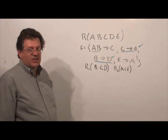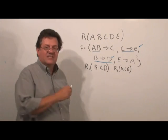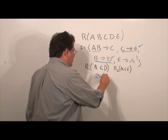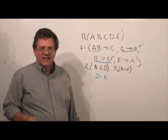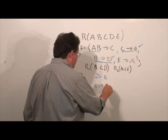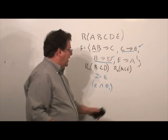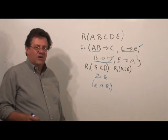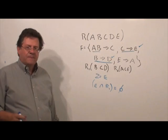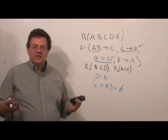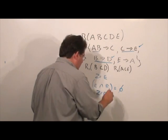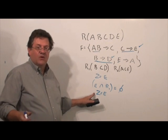Now, finally, we look at E function determines A. And we want to see whether that functional dependency is preserved. So, we start off with Z equal to E, the left-hand side. We do E intersect R1. And we know E intersect R1, they have nothing in common. So, when they have nothing in common, that means the Z will not change. The Z will still be what it was before we started.